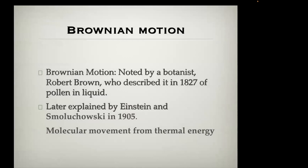The basis of diffusion-weighted imaging comes from Brownian motion, named for a botanist in 1827 who noticed that pollen in liquid continued to move even when he minimized movement of the liquid itself. Nearly 100 years later, this was explained by Albert Einstein and Polish researcher Smoluchowski in 1905. This was one of the foundations of the theory of relativity — Brownian motion was attributed to molecular movement from thermal energy.